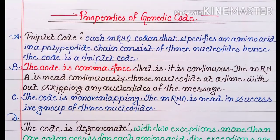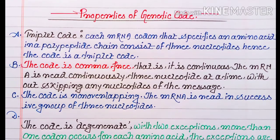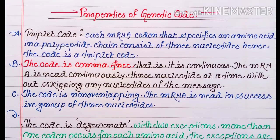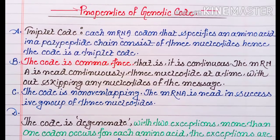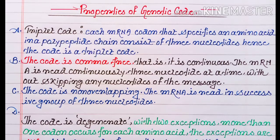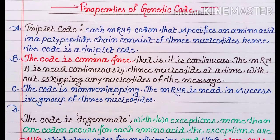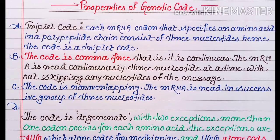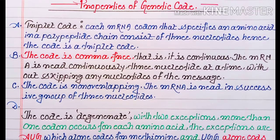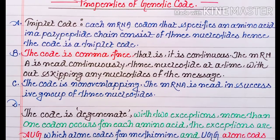Now look at the properties of genetic code. First, the triplet code: each mRNA codon that specifies an amino acid in a polypeptide chain consists of three nucleotides. Hence the code is a triplet code.